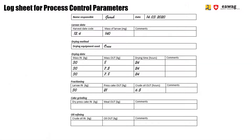In each module, we will also highlight important process control parameters to monitor your operation. You can download the log sheet we are using in this chapter — you will find the link for the download in the video description.